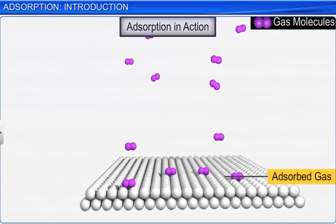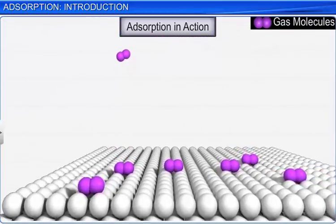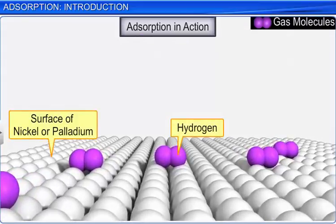The adsorption of a gas on the surface of a metal is called occlusion. For example, hydrogen is adsorbed on the surface of nickel or palladium.